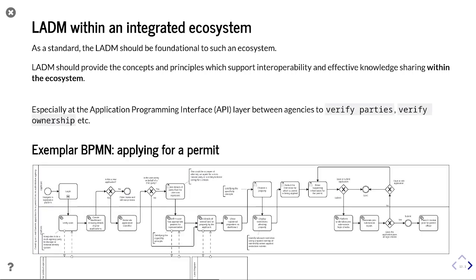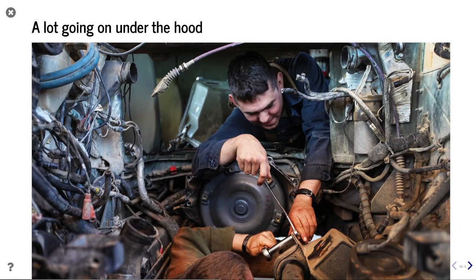This would especially occur at the application program interface layer between agencies, particularly where you're verifying parties, verifying ownership, and verifying relationships between agencies. We can see this in a BPMN model for applying for a permit: a user logs in and is verified, potentially against the Ministry of Interior. There may be a power of attorney going through the Ministry of Justice. Because the permit is about owned land, there's also verification between the permit-issuing agency and the land register. All of these different APIs need to pull in information from different agencies.